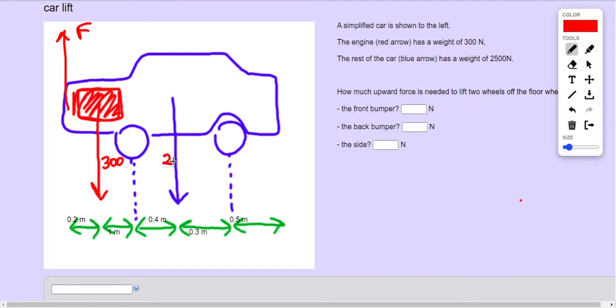2,500 here. Now if we're lifting from the front bumper, the car is going to pivot around the back wheel here.